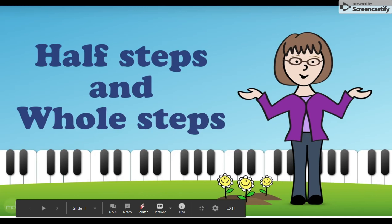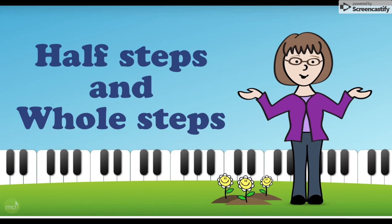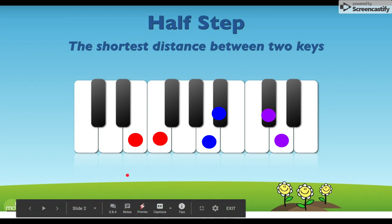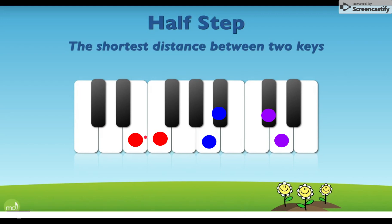Today we're going to talk about half steps and whole steps. A half step is the shortest distance between two keys. Here we have a half step going from a white key to the very next white key. We can also have a half step going from a white key to the very next black key, or from a black key to the very next white key. Notice these two white keys are only a half step because there is no black key in between them — they are directly touching.